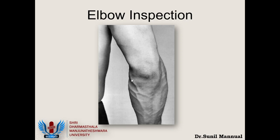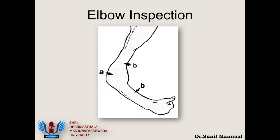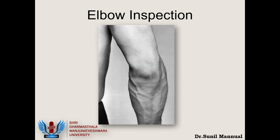The mobile wad is made up of three powerful muscles giving a nice contour to the elbow: the brachioradialis, the extensor carpi radialis longus, and the extensor carpi radialis brevis. I also want you to appreciate the muscle mass of the flexor compartment of the arm, the extensor compartment, and the forearm muscles both anteriorly and posteriorly. These are all inspectory findings.